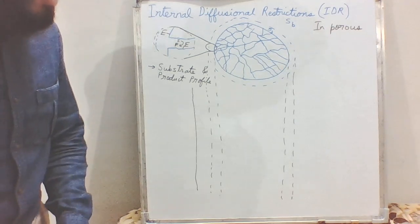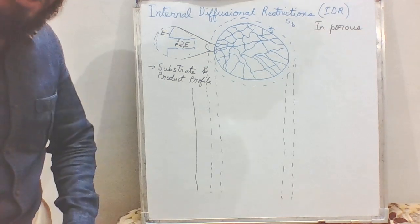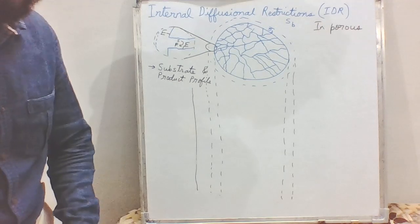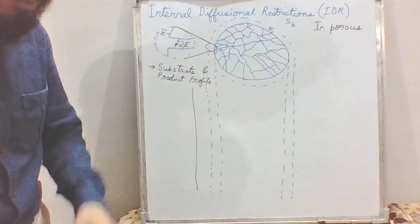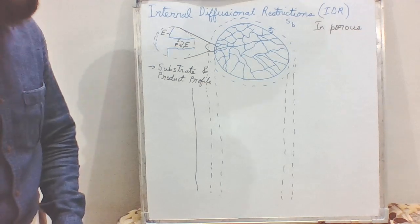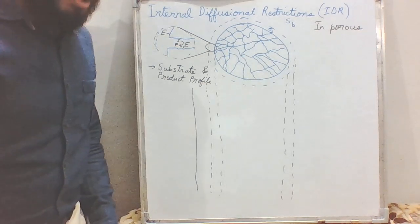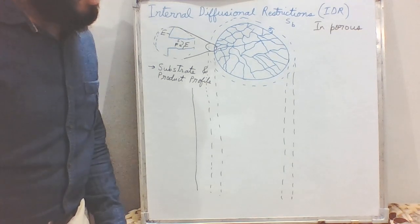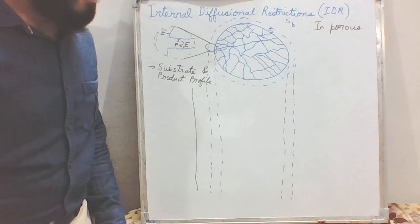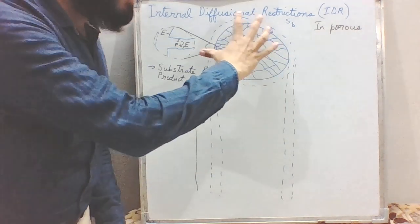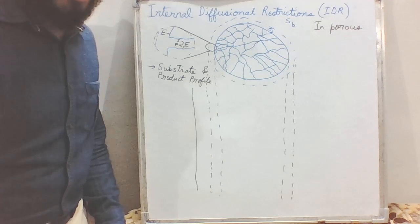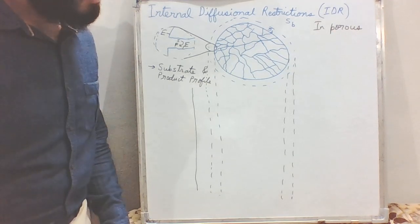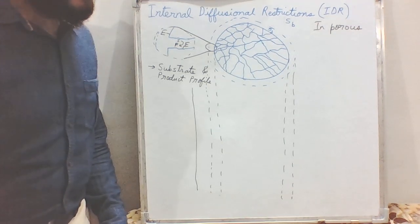The main objective of using porous particles is that they provide a greater surface area for enzymes to be immobilized. This is the primary reason why we use porous supports — in a very small space we can immobilize a lot of enzymes compared to impervious supports. But it comes with its own drawbacks: inside the porous supports, since there is very minimal movement of fluid, the diffusion of substrate is also very slow inside the support.